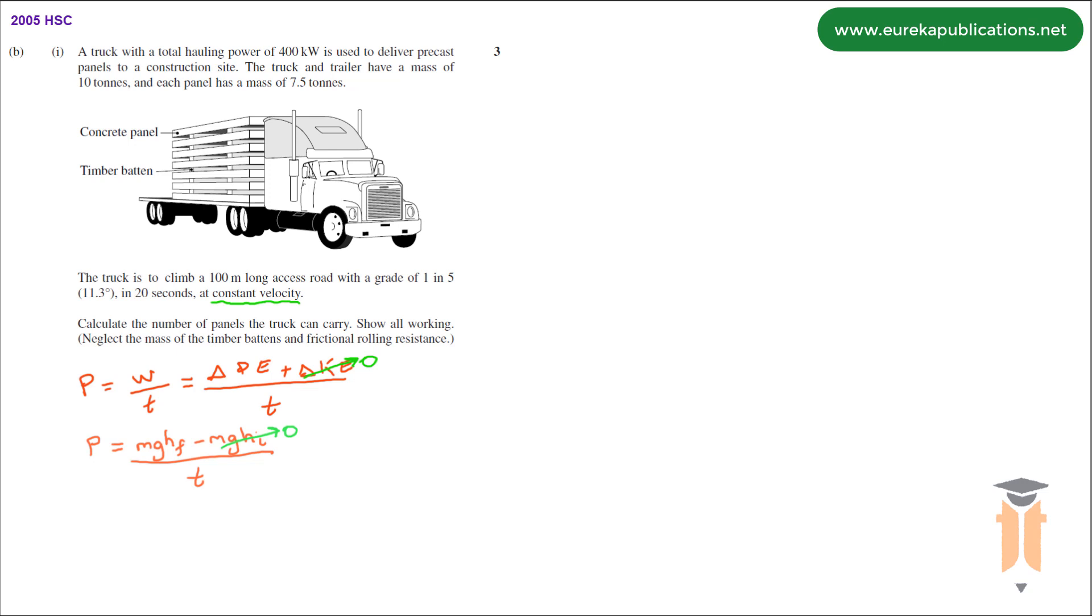Now we need to figure out what this final height is by using trig. The truck is climbing a 100 meter road at an angle of 11.3 degrees. There's my right angle here, this is 100 meters and I want to find my height.